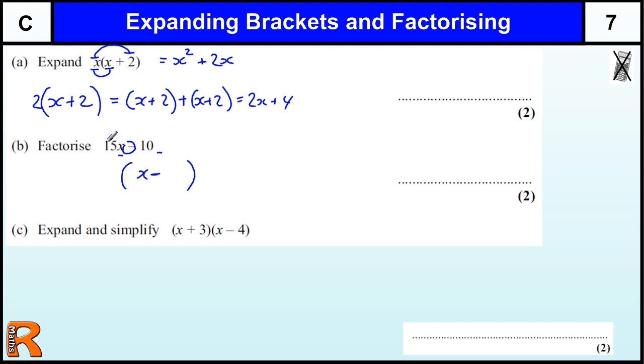Now when I'm doing this I'm thinking about what the biggest number that goes into these two things are. And the biggest number that goes into 15 and 10, the only number other than 1, is the number 5. Now I'm thinking about what do I need to multiply 5 by to get 15x? Well 5 times 3 is 15. So if I want 15x I need to have 5 times 3x. Because 5, 3 is 15 and there's the x on the end.